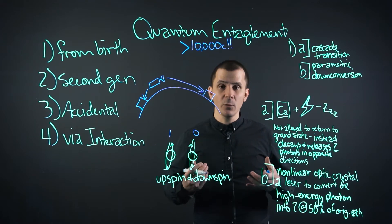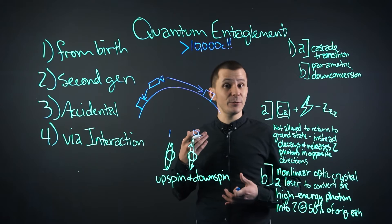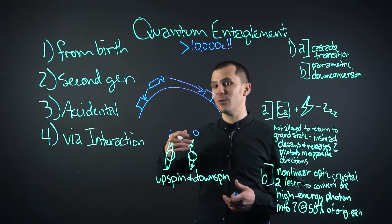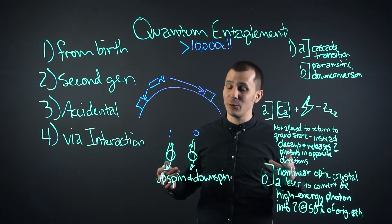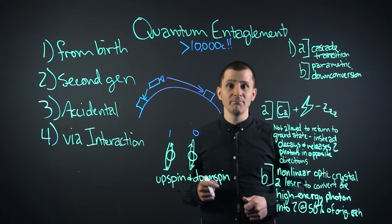you cause the quantum entanglement to collapse, and therefore they know somebody tried to spy. But it's impossible to get the data because the moment you try to hack into it, you collapse the security system and they have to create a new encryption pair. It's pretty cool.